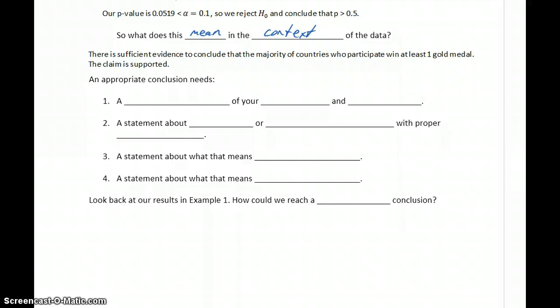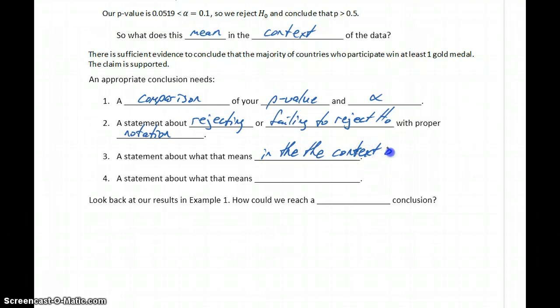But let's just provide a summary. So we already summarized what we need to get the process started. So let's summarize what we need in an appropriate conclusion. So what we need is a comparison of our p-value and our significance level, which is alpha. We need a statement about rejecting or failing to reject the null hypothesis with proper notation. We need a statement about what that means in the context of the data. And we need a statement about what that means about the original claim.